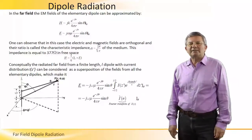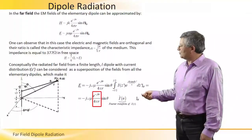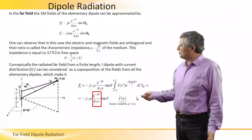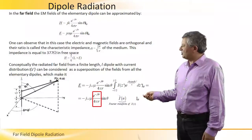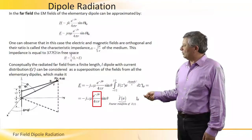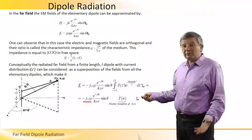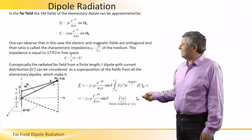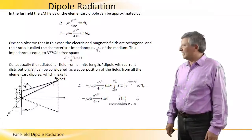This is the angular dependence of an elementary dipole, and e to the minus jkr over 4πr represents the spherical nature of the dipole in far field. j omega here in the frequency domain translates into the time domain as a derivative with respect to time.